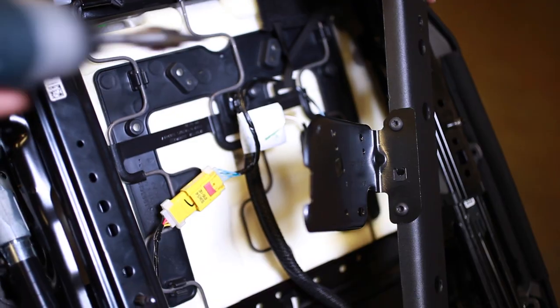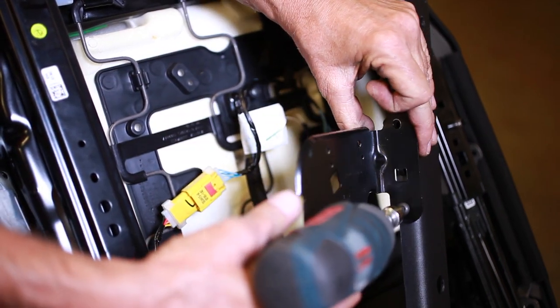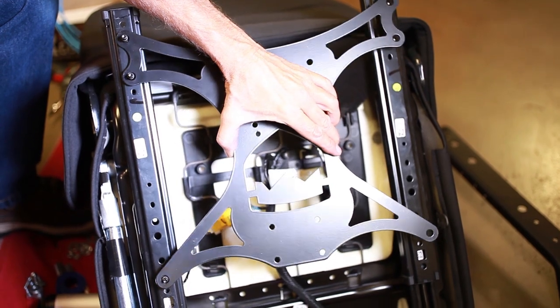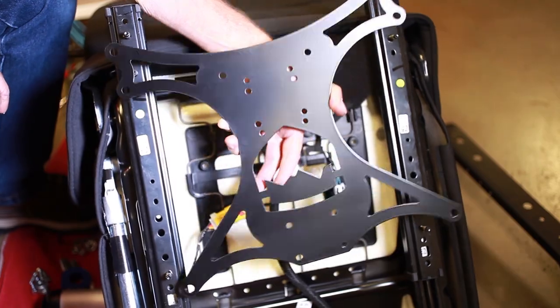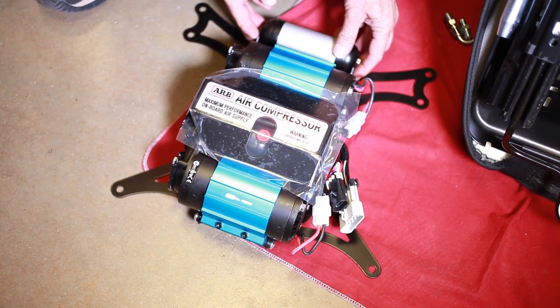With the seat mount bracket removed, use a 35 millimeter torque and separate the connector mounting plate and discard. The ARB compressor mount is symmetrical and it can be mounted in either direction. When the compressor is fully installed, it'll look like this.